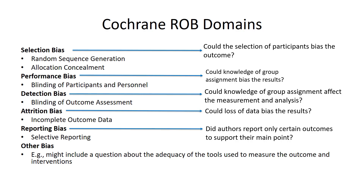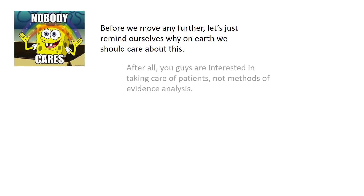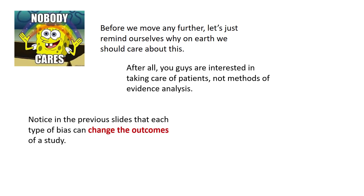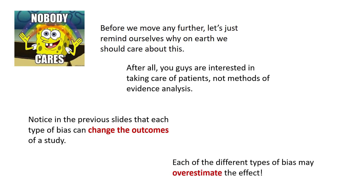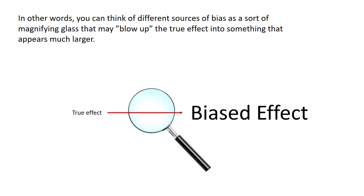Before we move further, let's remind ourselves why we would care about this. After all, you're interested in taking care of patients, not methods of evidence analysis. But notice that each type of bias can change the outcomes of a study. Each of these different types of bias may overestimate the effect. You can think of different sources of bias as a magnifying glass that can blow up the true effect into something that appears much larger. So if there's a true effect but it's really quite small, bias in the articles can make it look like a really big effect, which is wrong.